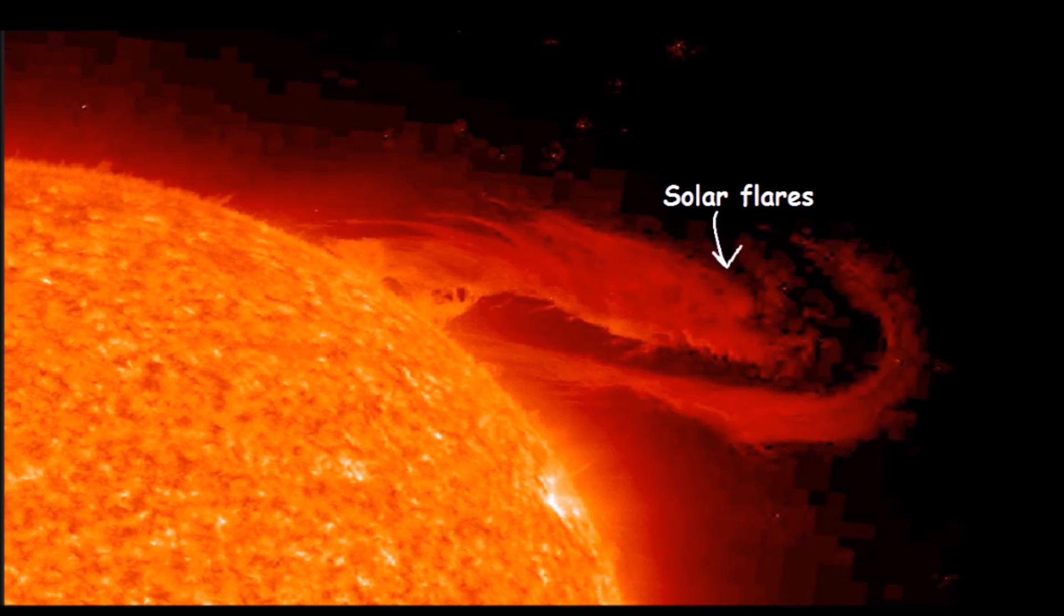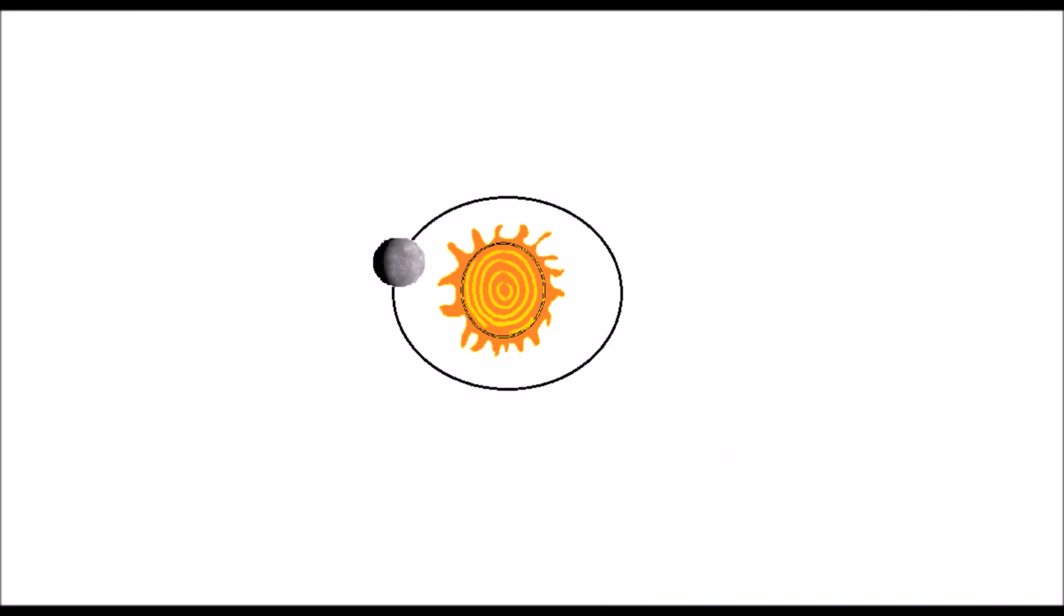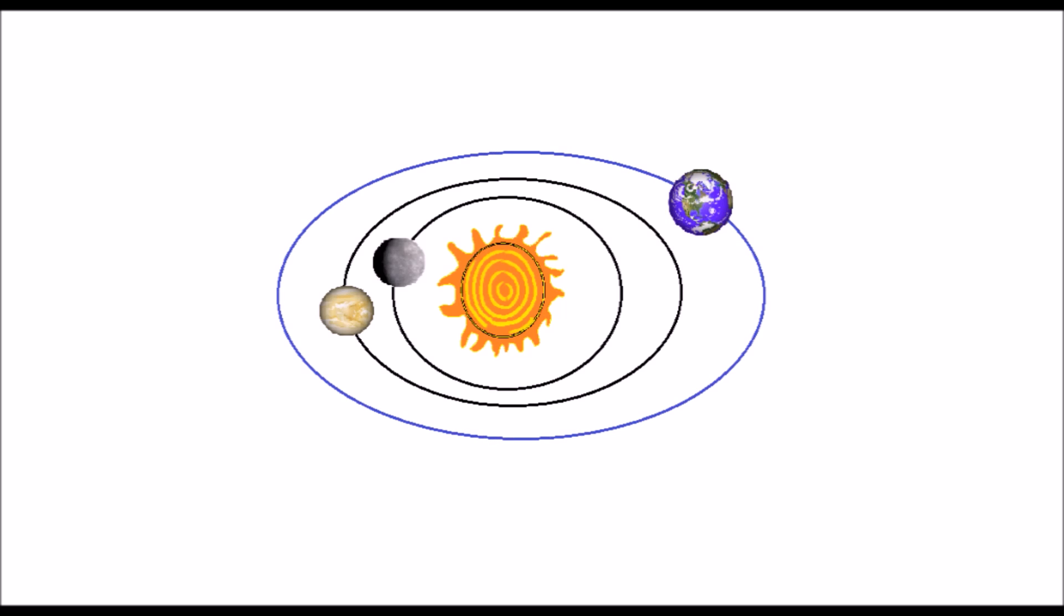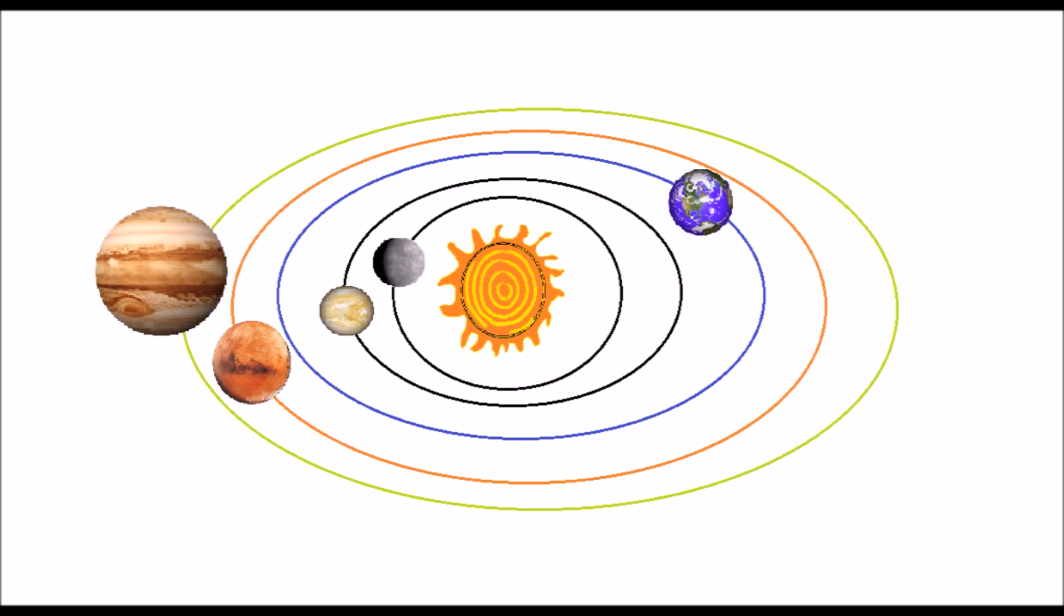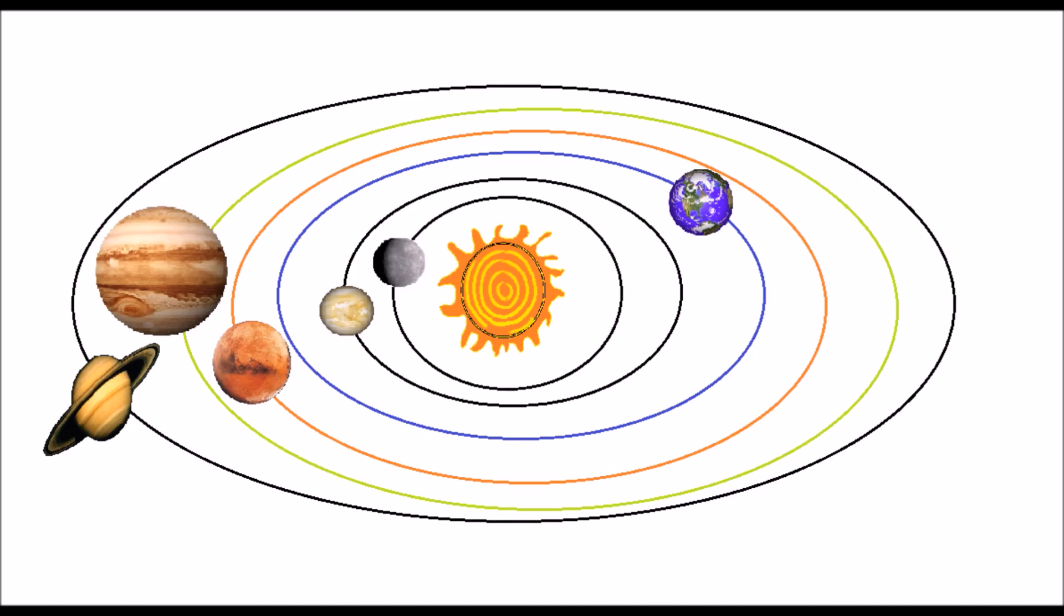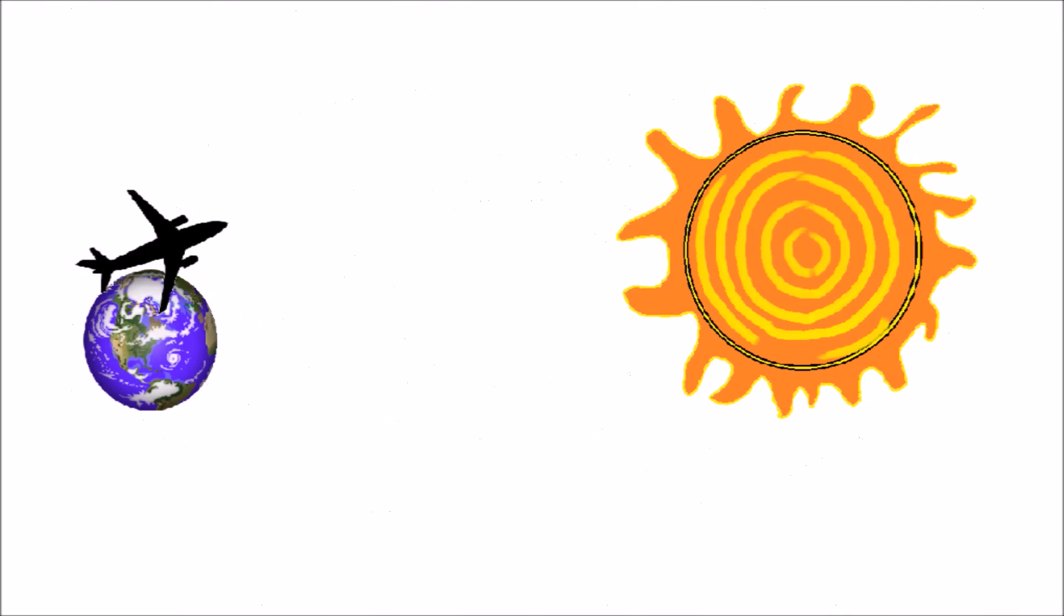Our Sun is at the center of our solar system. All eight planets orbit around the Sun. If an airplane could travel to the Sun at maximum speed, it would take 25 years to reach it.